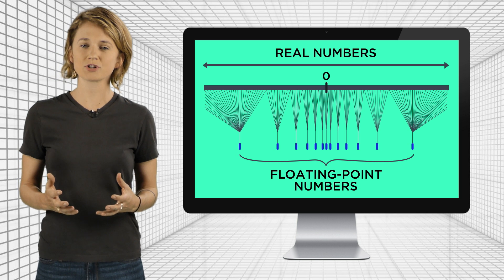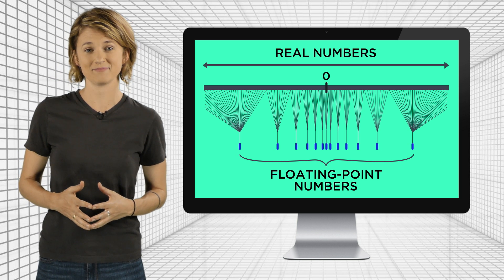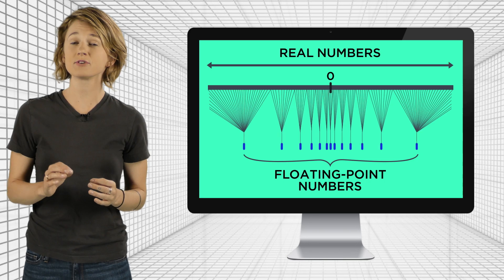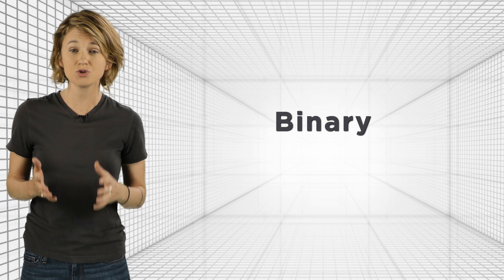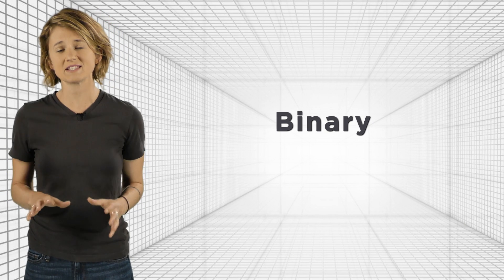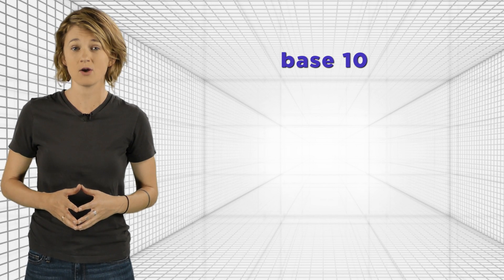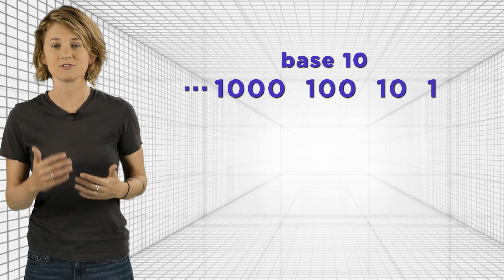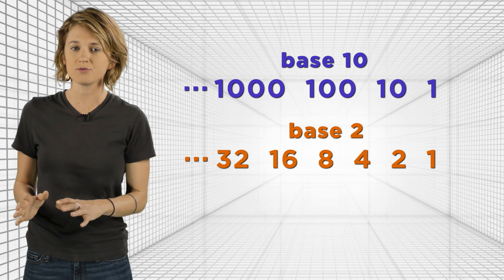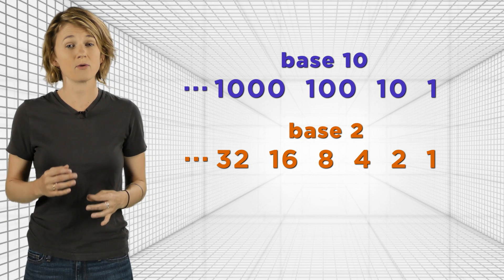Let's explore the structure of this computer number line. You've probably heard that computers use binary, or base 2, numbers. In good old base 10, we represent the digits using increasing powers of 10: 1, 10, 100, 1000, and so on. But in base 2, the digits represent increasing powers of 2: 1, 2, 4, 8, 16, 32, and so on.